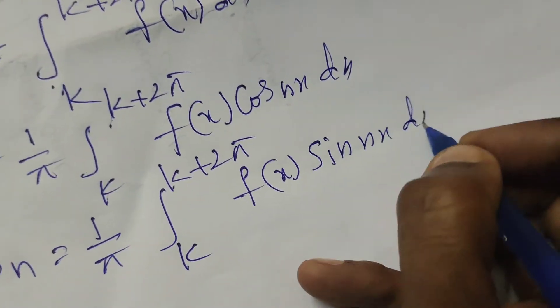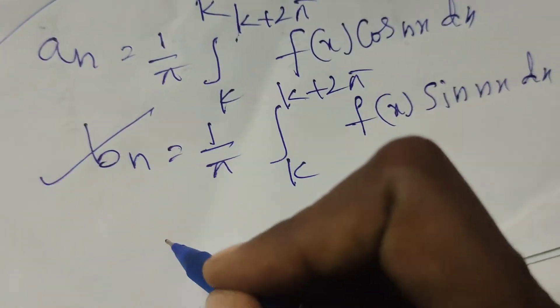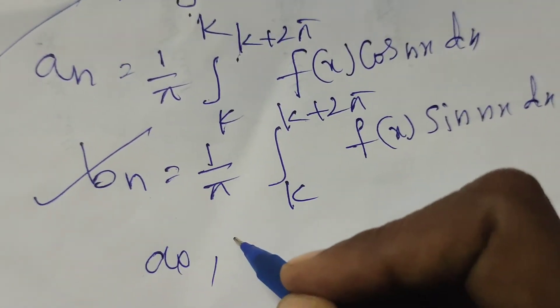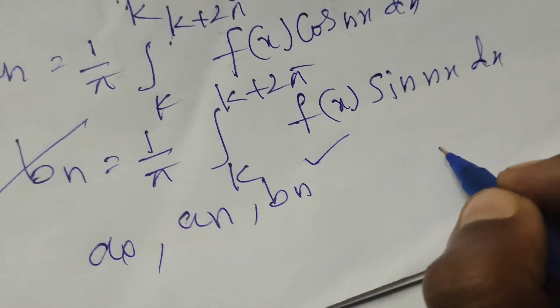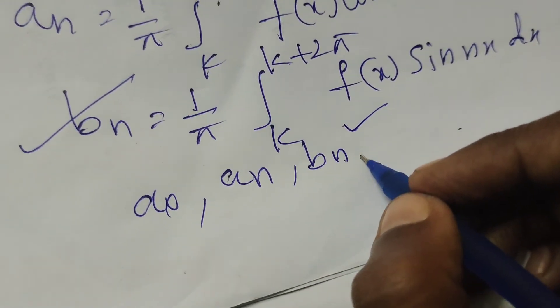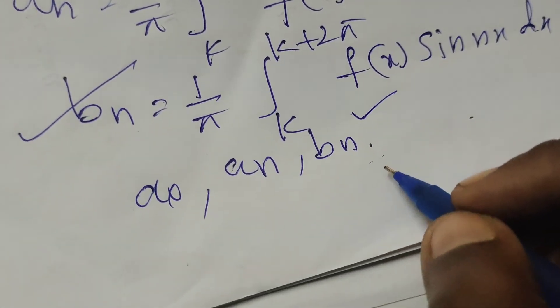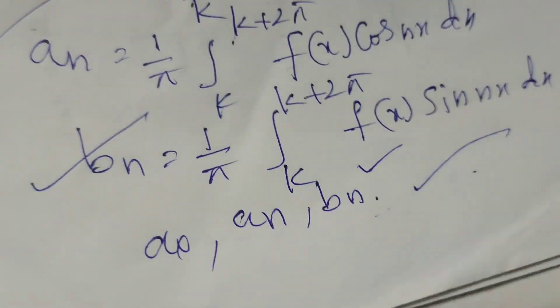Okay, here a0, an, bn are the Fourier constants and also it is known as Euler's formulae of the given function f of x. That's it.